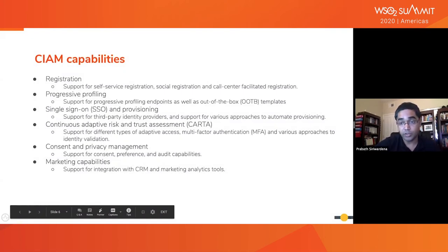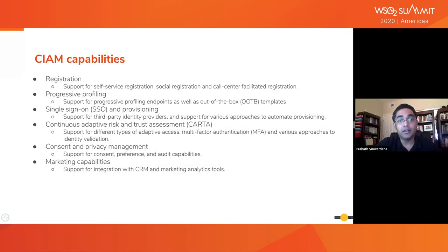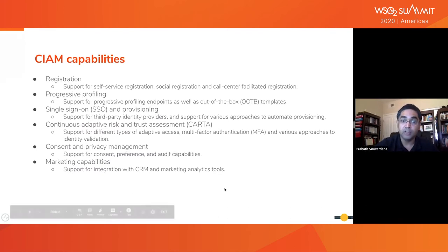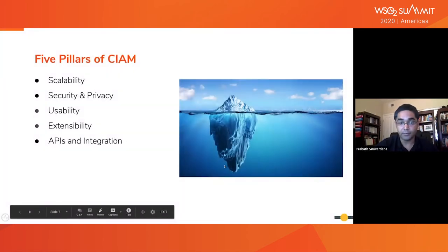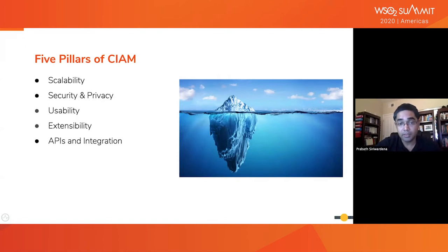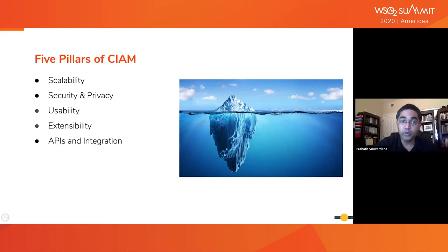When we build a CIAM solution to address these challenges, there are core functional requirements we need to worry about — all of them very much self-explanatory. But what matters most is how you build these core CIAM features while addressing key non-functional requirements, which we call the five pillars of CIAM. What your customers and partners experience is the tip of the iceberg; that's the experience your CIAM solution is building. Underneath, to build the right level of user experience, you need to worry about these five pillars.